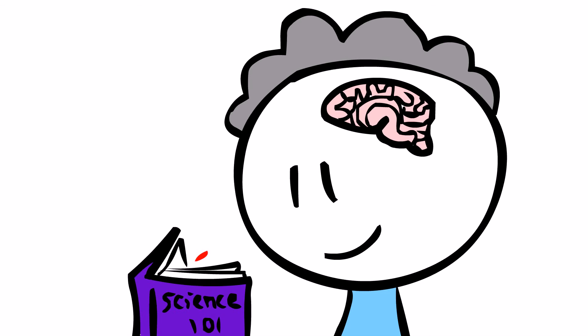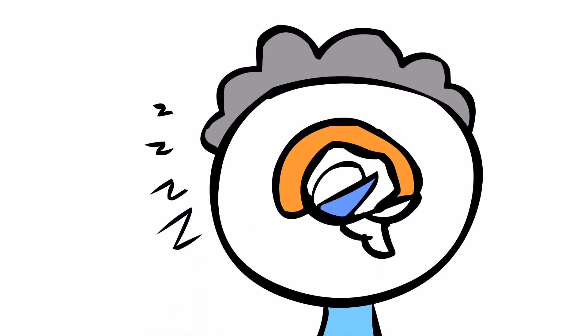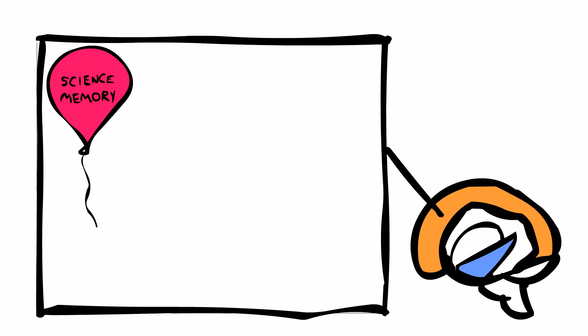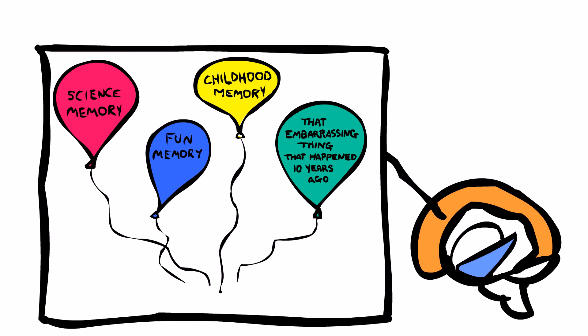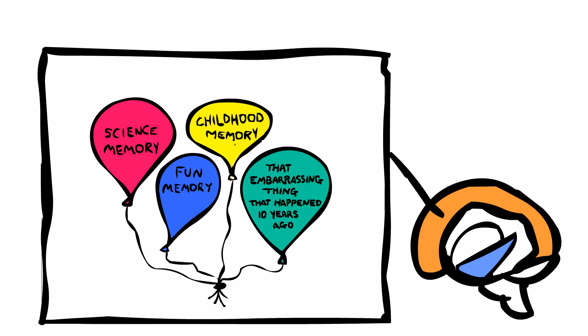Here is Bob again. Whatever he sees during the day is stored in the hippocampus. When he sleeps, his memories are being transferred to the outer part of the brain, and then memories are replayed and reorganized, resulting in memory consolidation.